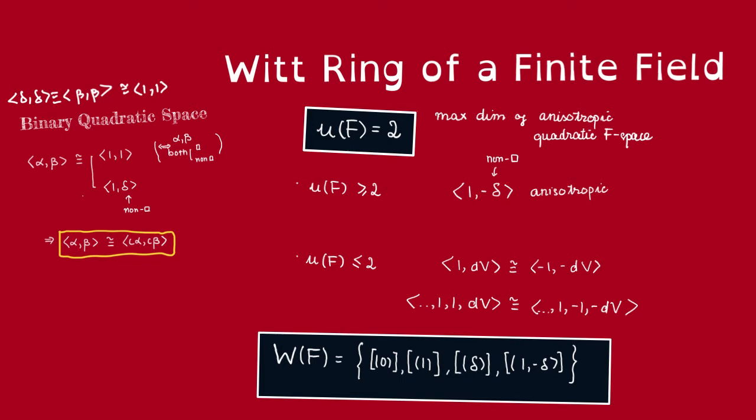So now coming back, we want to show that the maximum dimension of an anisotropic quadratic F-space is 2. This is called the u-invariant of F. We define it to be this maximum dimension. So let's see why. First, we claim that it has to be greater than or equal to 2.